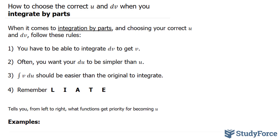L stands for logarithmic functions. I stands for inverse trig. A stands for your typical algebra. T stands for your ordinary trig. And finally, the least priority is E, which stands for exponentials.